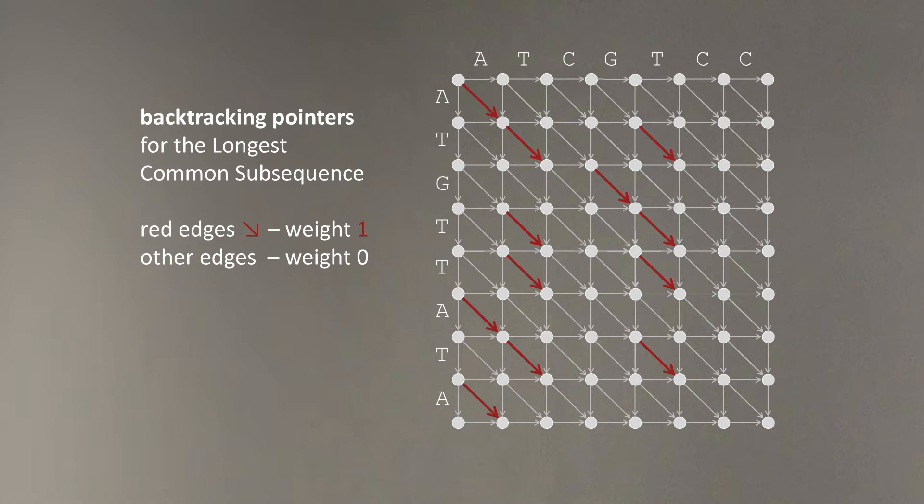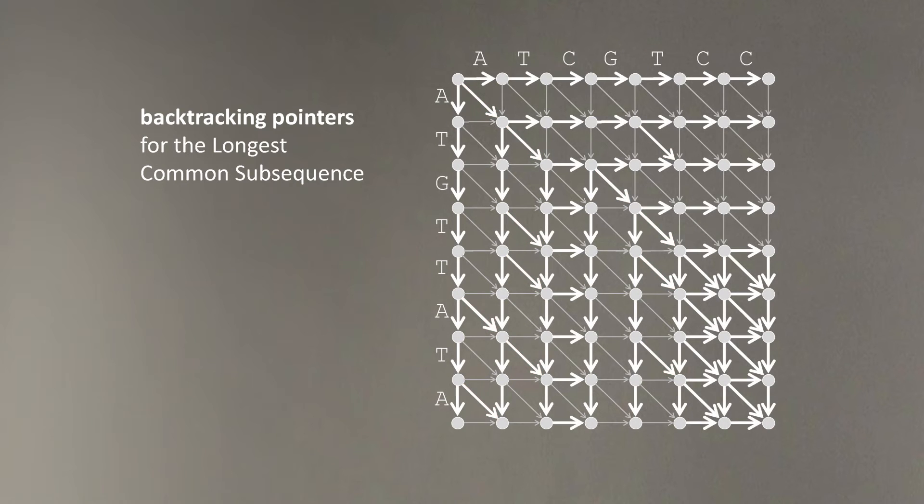And as before, we of course preserve the backtracking pointers for the longest common subsequence. And in this case, red edges have weight 1, all other edges have weight zero, and here are the backtracking pointers for our particular problem.